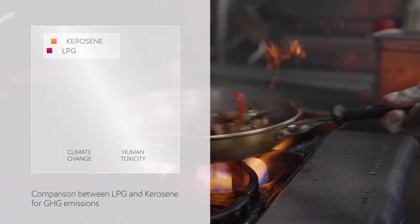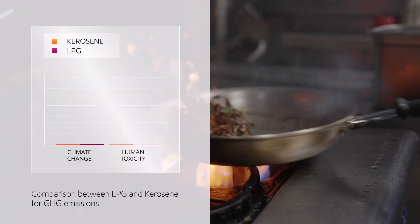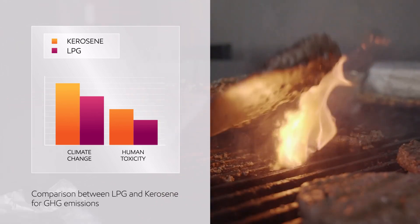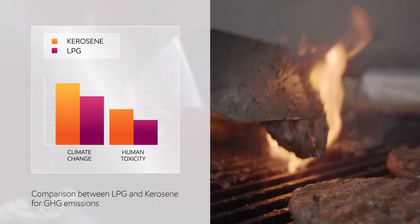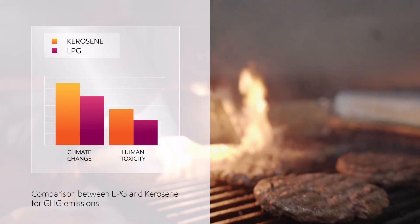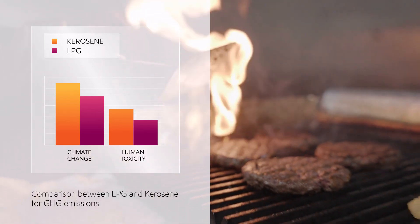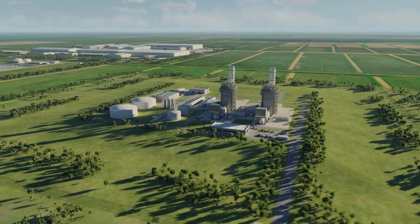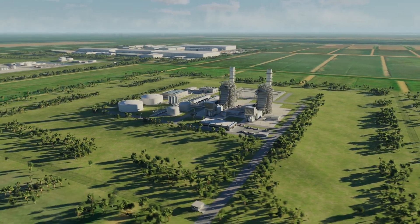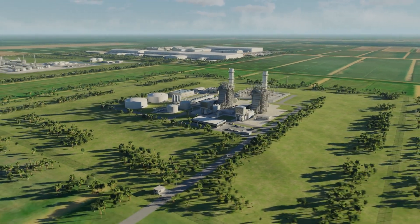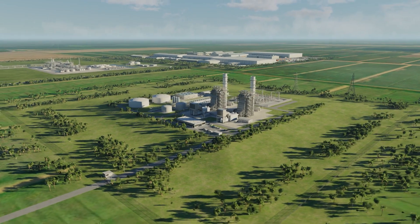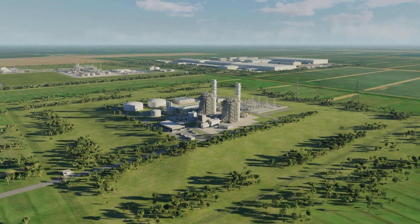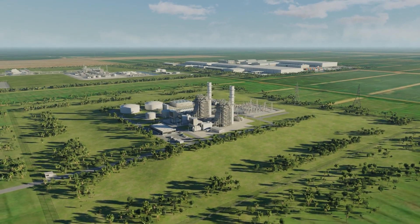Using propane or butane extracted from the gas would improve health and cut by nearly 20% the greenhouse gases emitted when kerosene is burnt for cooking. A reliable baseline power source will also allow renewable energy to develop and play an integral and secure part in the energy mix.